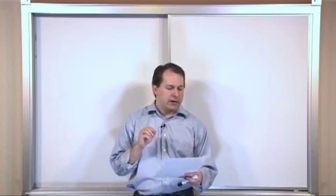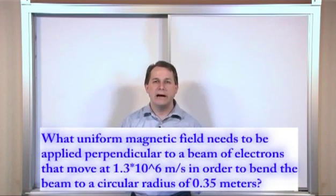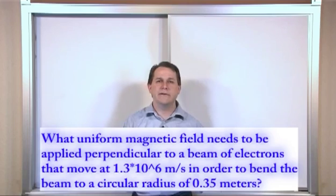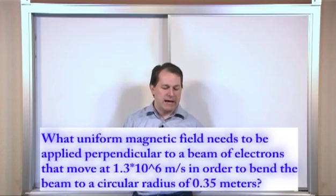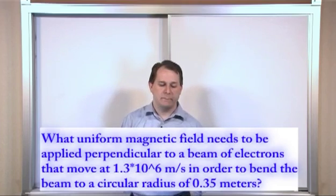So let's apply that to our first problem. The problem says what uniform magnetic field needs to be applied perpendicular to the beam of electrons that move at 1.3 times 10 to the sixth meters per second in order to bend the beam to a circular radius of 0.35 meters.